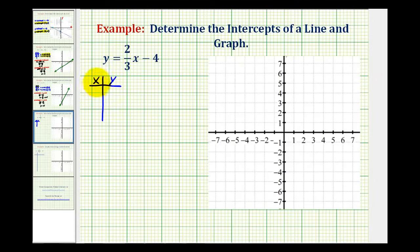If we want to find the x intercept, we need to set y equal to zero and solve for x. And then, in order to determine the y intercept, we'll set x equal to zero and solve for y.